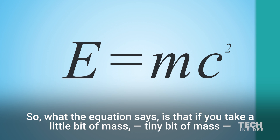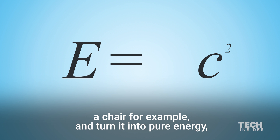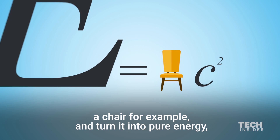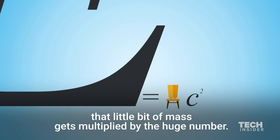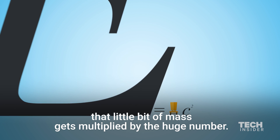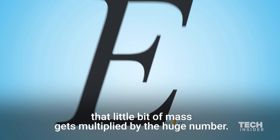So what the equation says is that if you take a little bit of mass — a tiny bit of mass, a chair for example — and turn it into pure energy, that little bit of mass gets multiplied by the huge number.